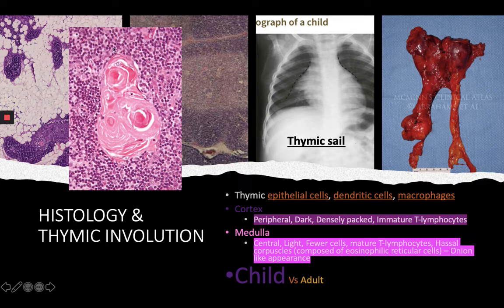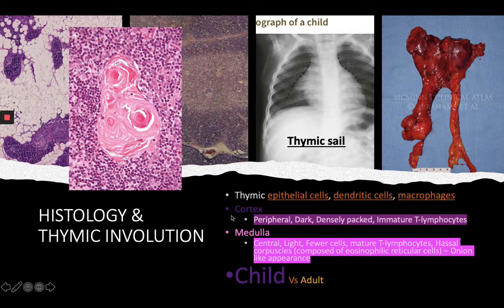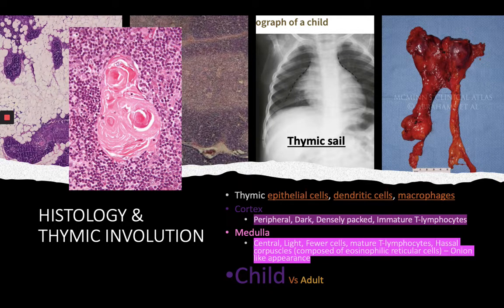In a microscopic picture you can see this structure which is called the Hassall's corpuscle. It is found in the medulla and has an onion-like structure. It consists of eosinophilic reticular cells which produce cytokines that are necessary for the maturation of the T lymphocytes.